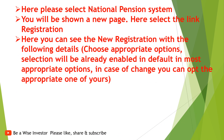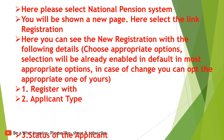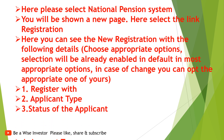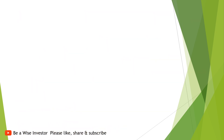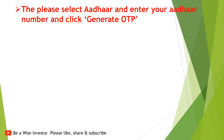Here, you can see the new registration with the following details. Choose the appropriate options — selection will already be enabled by default. In default, the most appropriate options are pre-selected; in case you want to change, you can opt for the appropriate one. The first one is Applicant Type, Status of the Applicants, Account Type, and how you heard about NPS. Then, please select Aadhaar, enter your Aadhaar number, and click Generate OTP.